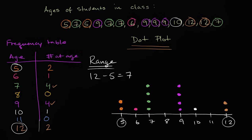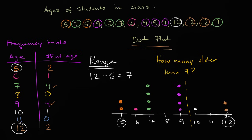We could also ask: how many students are older than nine? Looking at the dot plot, beyond nine we count one, two, three dots. Or from the frequency table, it's the one person who's ten and the two who are twelve — so there are three students older than nine. Hopefully this gives you an appreciation for two ways of representing data: frequency tables and dot plots.